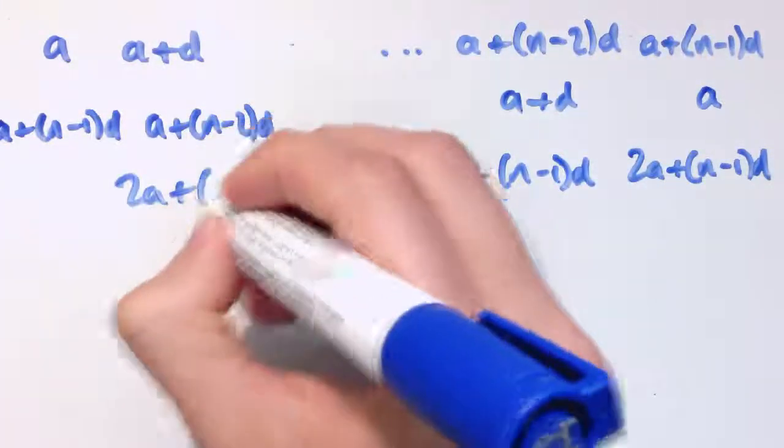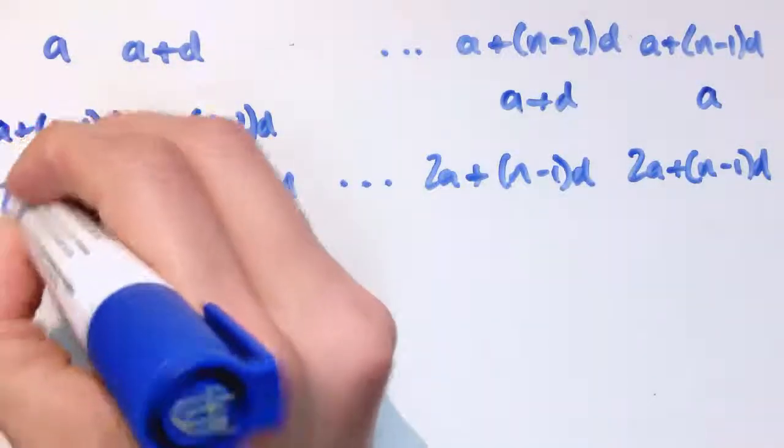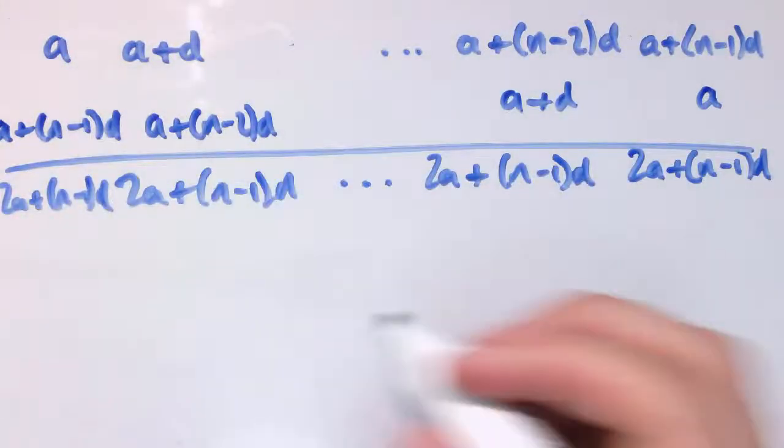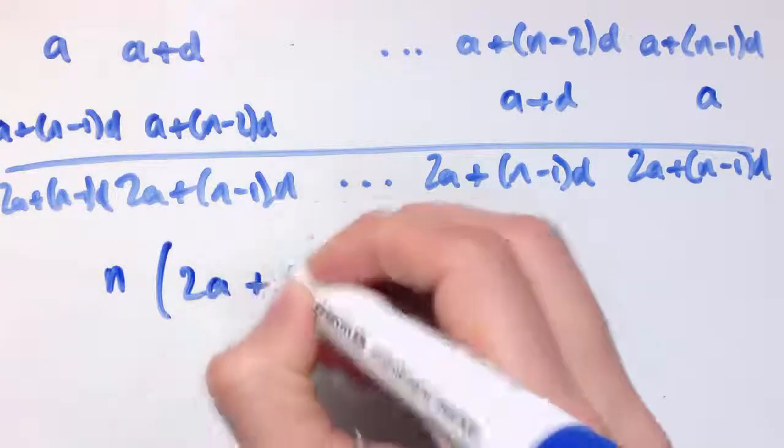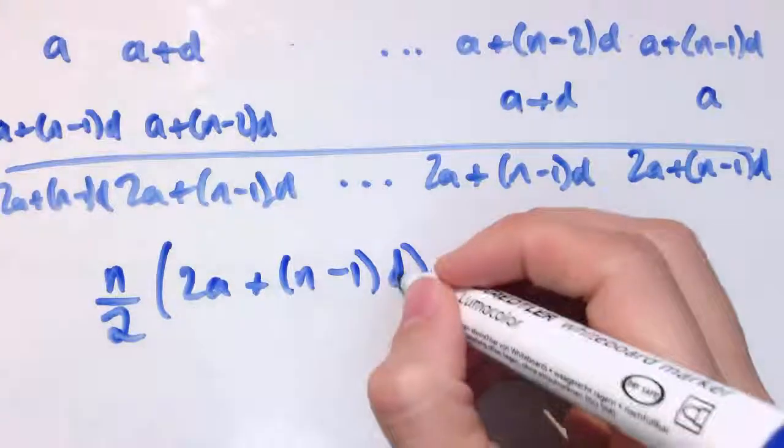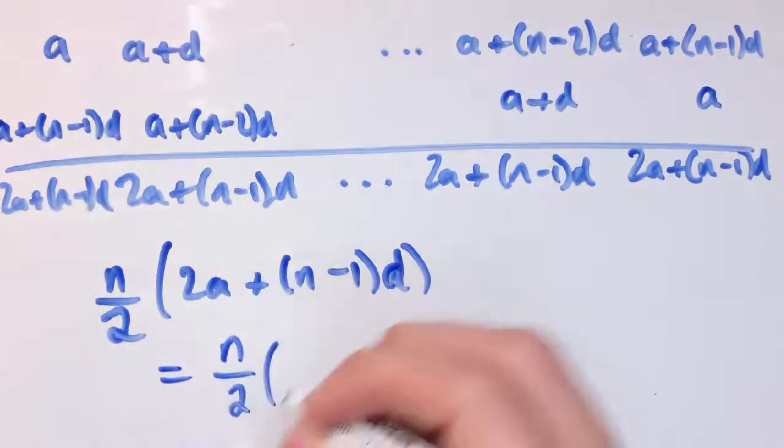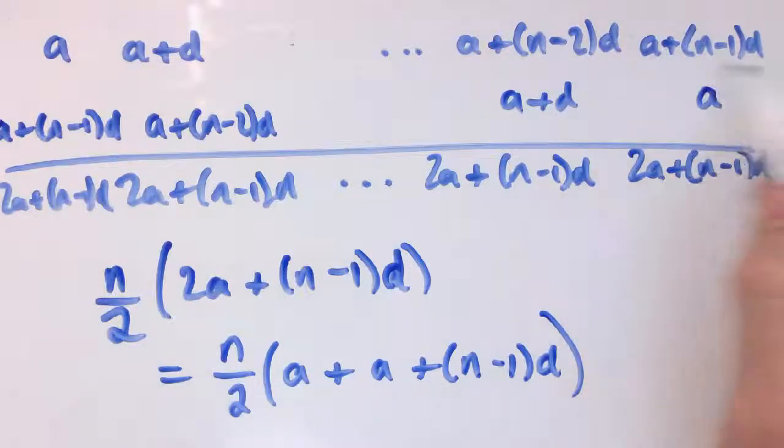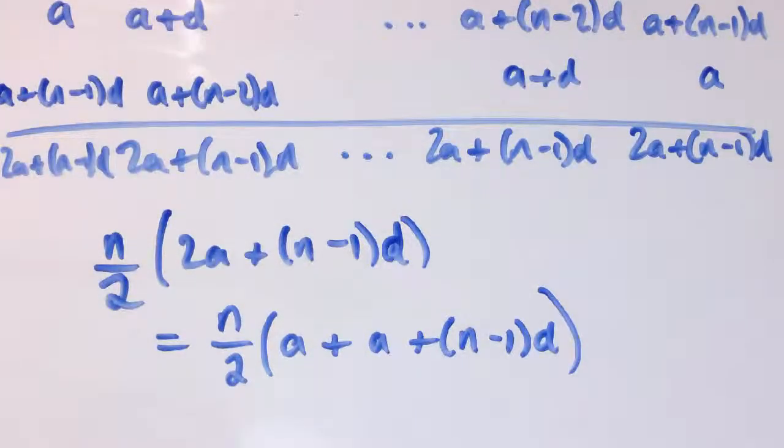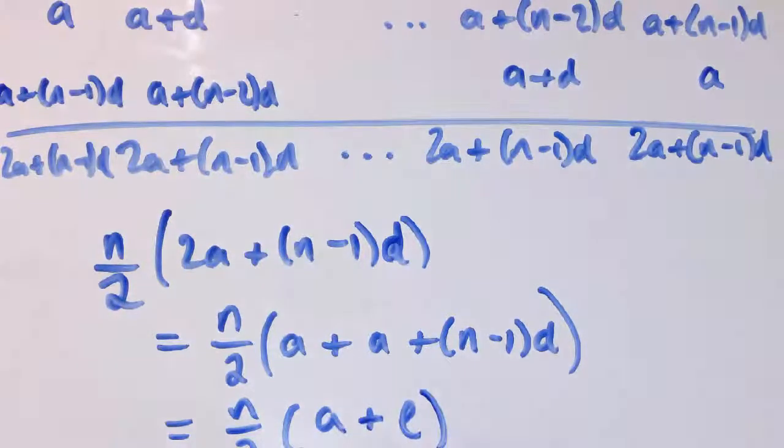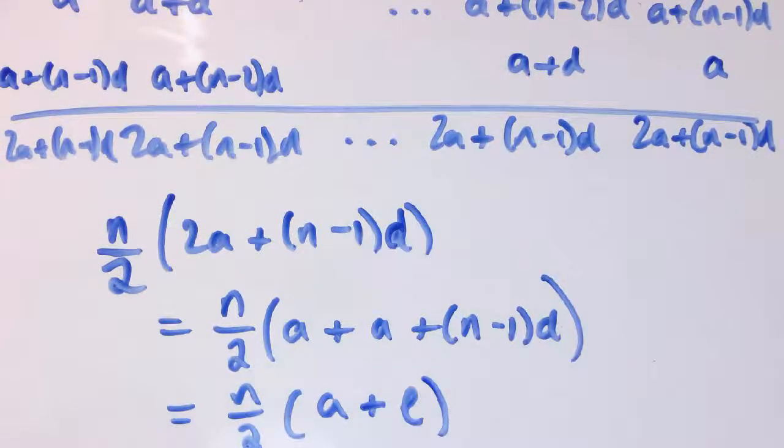So actually, when we add all these together twice, we get all of these are 2a plus n minus 1d here as well, another one here. So when I add this sequence together twice, I get n lots of 2a plus n minus 1d, and I've counted that sequence twice, so I just need to divide by 2. And this is another way of writing down the formula we had before, because you could write this as n over 2 times a plus a plus n minus 1d, and a plus n minus 1d, all of this bit, is the last term in the sequence. So we could also write this as n over 2 times a plus l. So two different ways of writing down the same thing there.